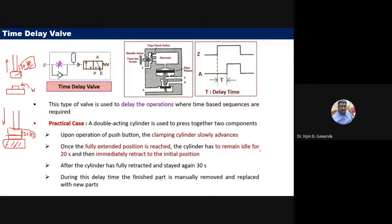In the punching example, a 30-second delay allows placing the workpiece, and a 20-second delay after punching ensures proper contact before retraction. These timings are set using the time-set screw or metering orifice in the time delay valve. The symbol and schematic for the time delay valve represent this functionality.